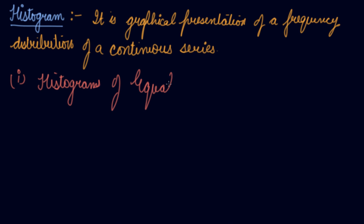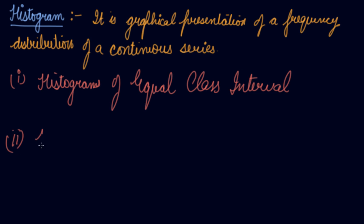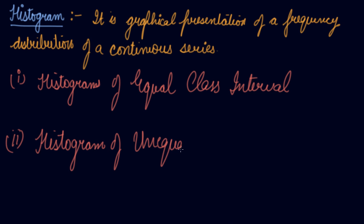Histograms are of two types. Number one is histograms of equal class intervals. Number two is the histogram of unequal class intervals.